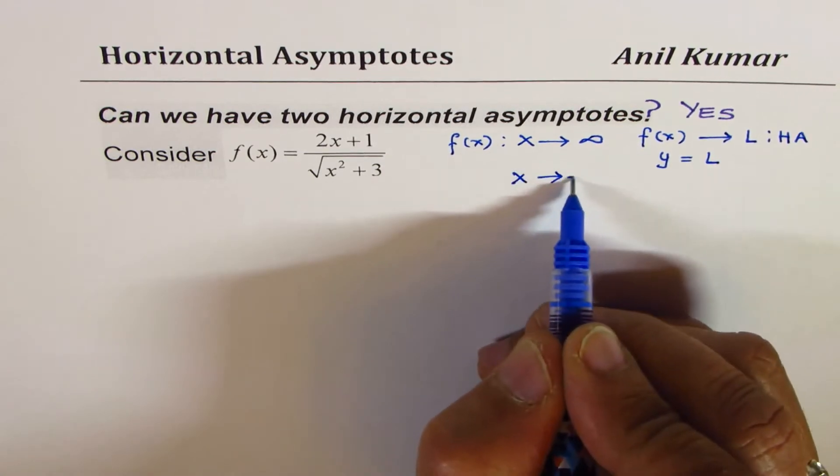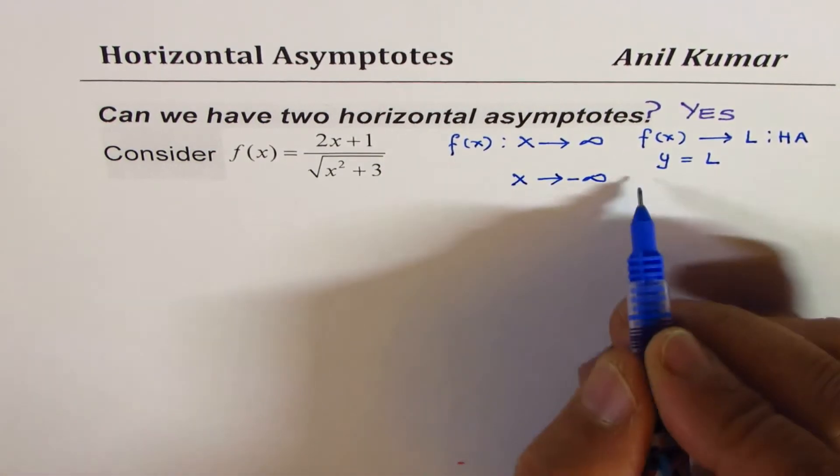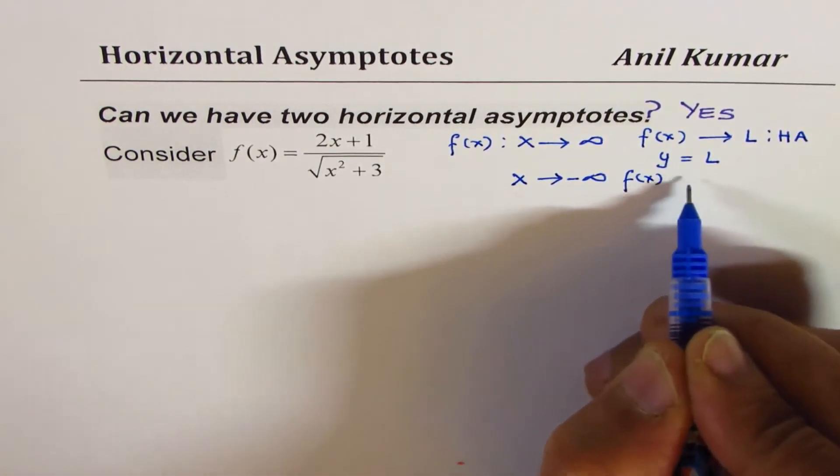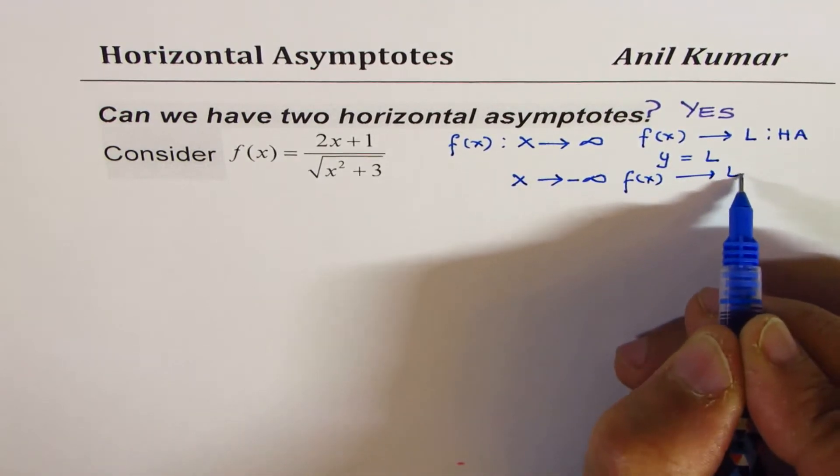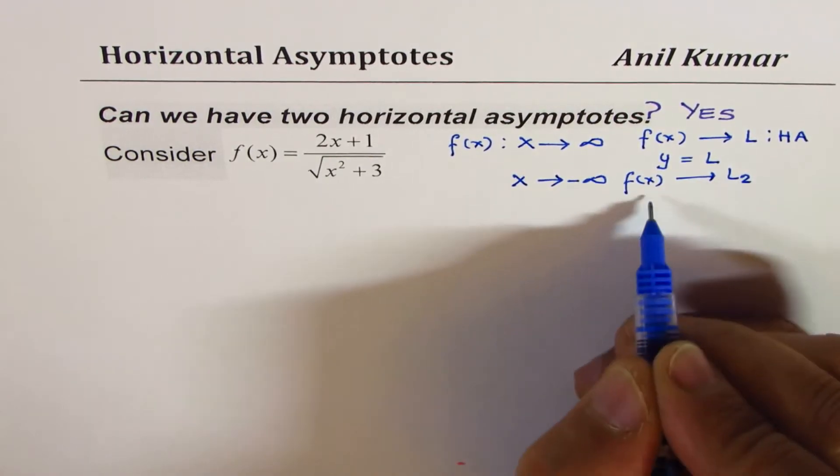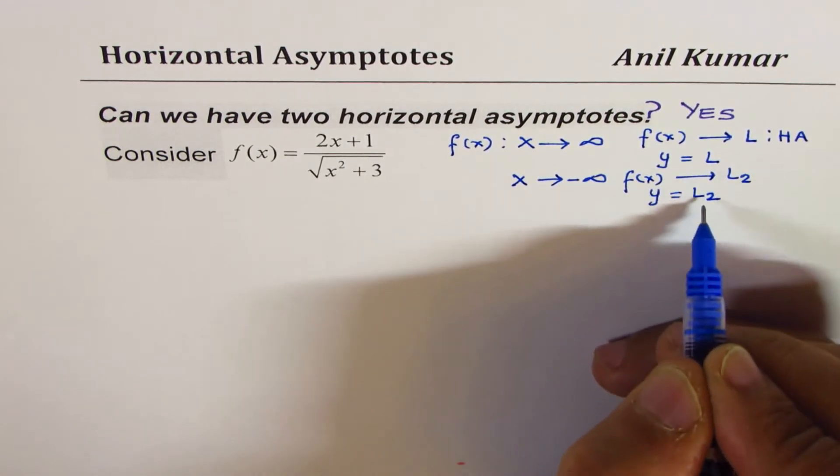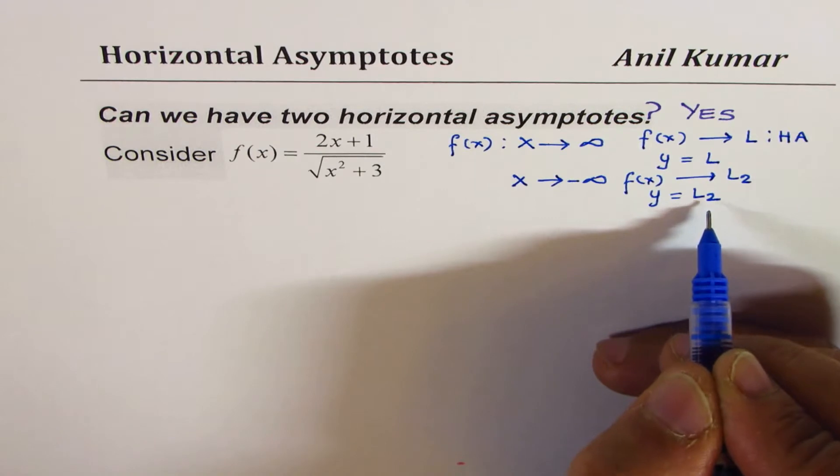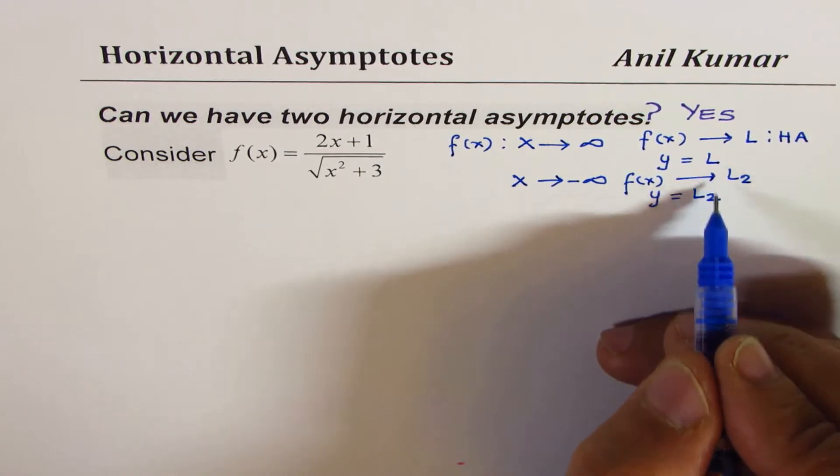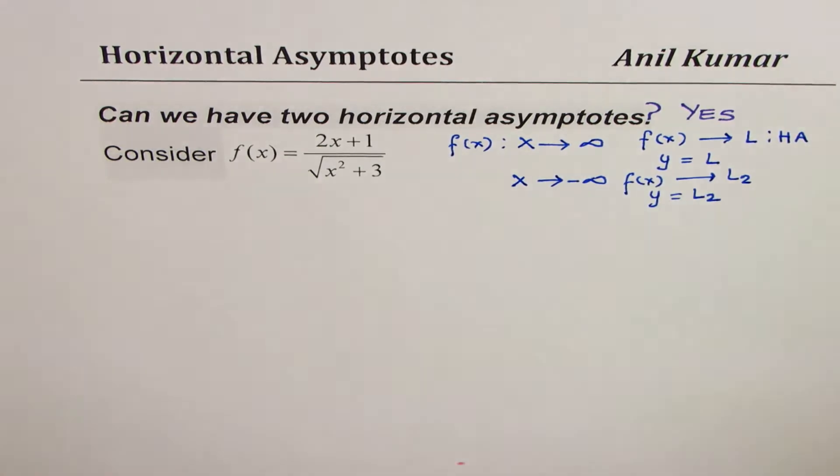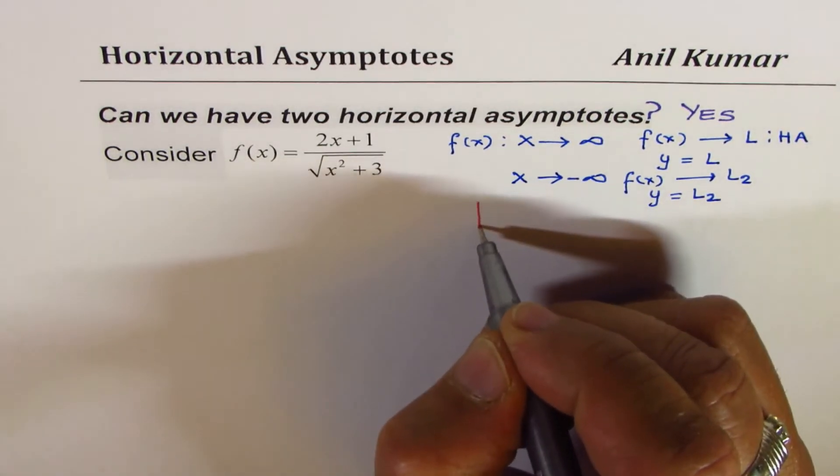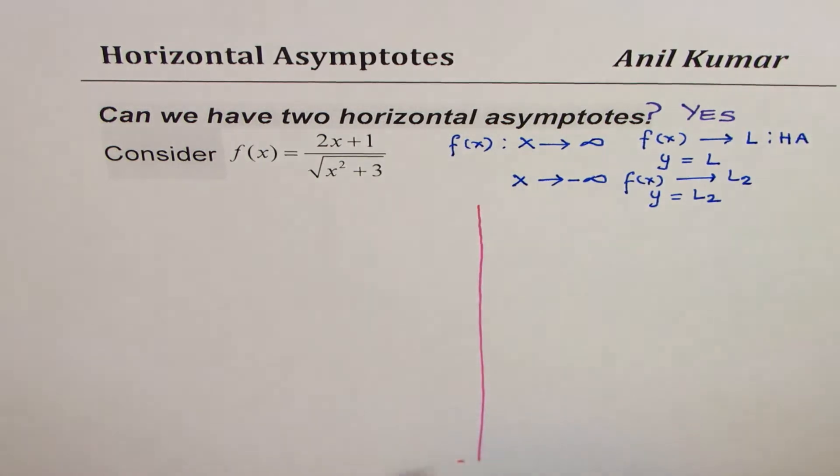The thing is that we could also consider what happens to the function when it approaches negative infinity. In that case, the function could approach some other value, let's say L2, giving y equals L2 as the second horizontal asymptote. Most of the time these are same values, but not always. In this particular example they are different values.